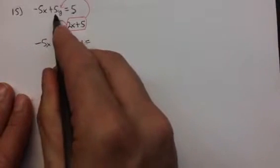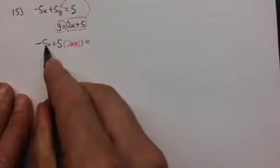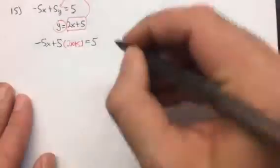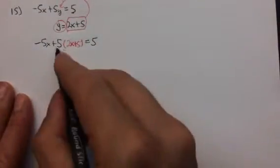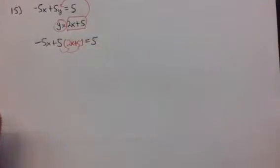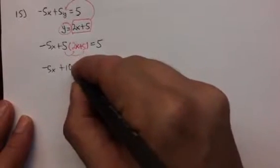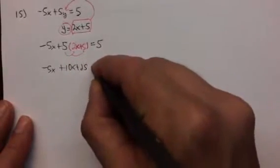So here's our negative 5x plus 5y equals 5. And we're going to distribute because the 5 is multiplying times a binomial. So negative 5x plus 10x plus 25 equals 5. Notice we only have x's here.